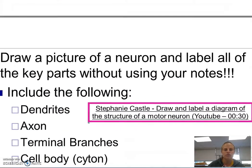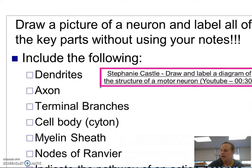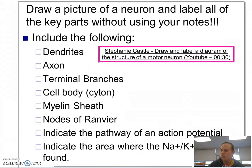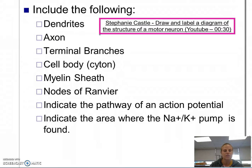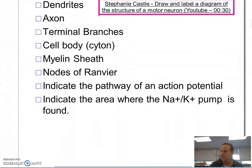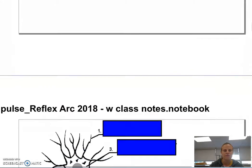So if you were to draw a picture of a neuron and label all of the key parts, make sure that you can draw and label the dendrites, the axon, the terminal branches, the cell body which is also called the cyton. You can also indicate where the nucleus of the cell body is located. The myelin sheath, the nodes of Ranvier, make sure you know the pathway of the action potential, and where the sodium-potassium pump is going to be found.